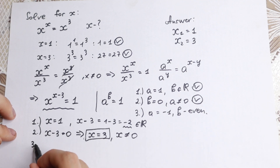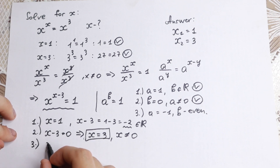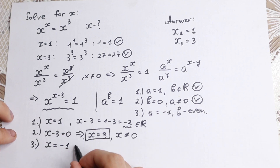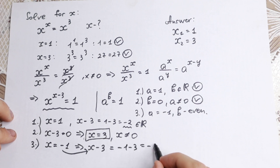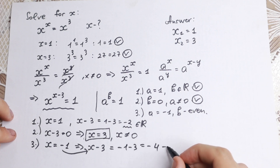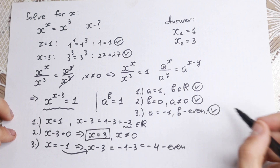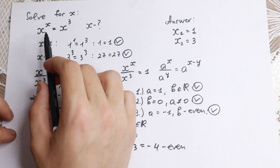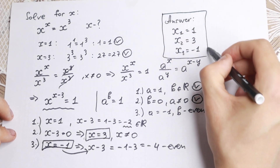For the third case, a equals minus 1, so x equals minus 1. We need the power x minus 3 to be an even number. Substituting, minus 1 minus 3 equals minus 4, and minus 4 is an even number. So the third case works, and we find our last root: x₃ equals minus 1 — a root we could not have found by inspection alone.